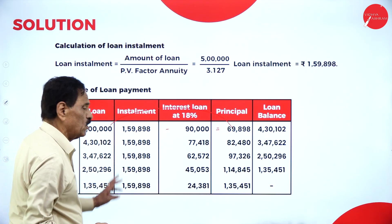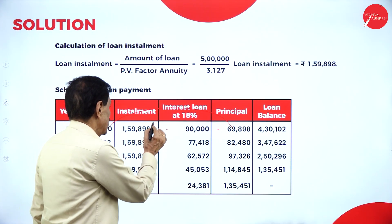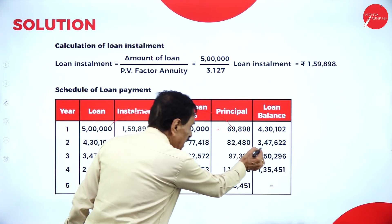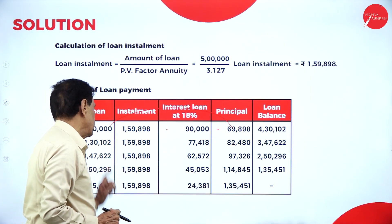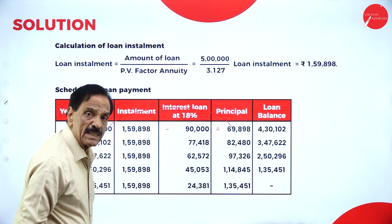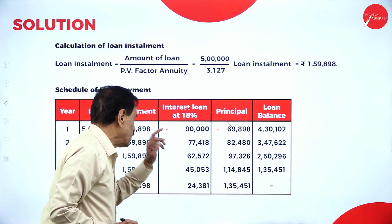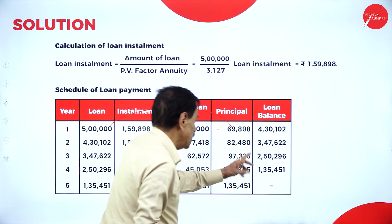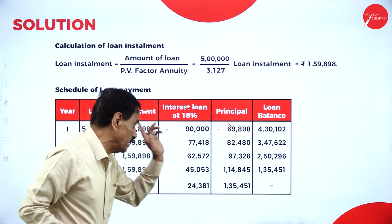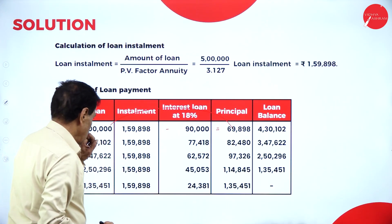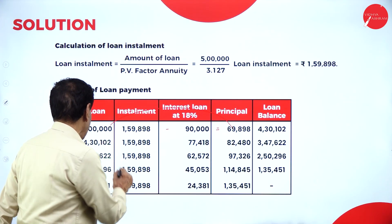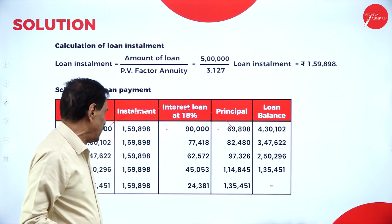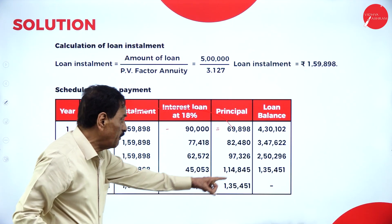Year 2: balance brought forward 4,30,102; installment 1,59,898; interest at 18% is 77,418; principal repayment 82,480; balance 3,47,622. Year 3: installment 1,59,898; interest at 18% is 62,572; principal repayment 97,326; balance 2,50,296. Year 4: balance 2,50,296; installment 1,59,898; interest at 18% is 45,053; principal repayment 1,14,845; balance 1,35,451.